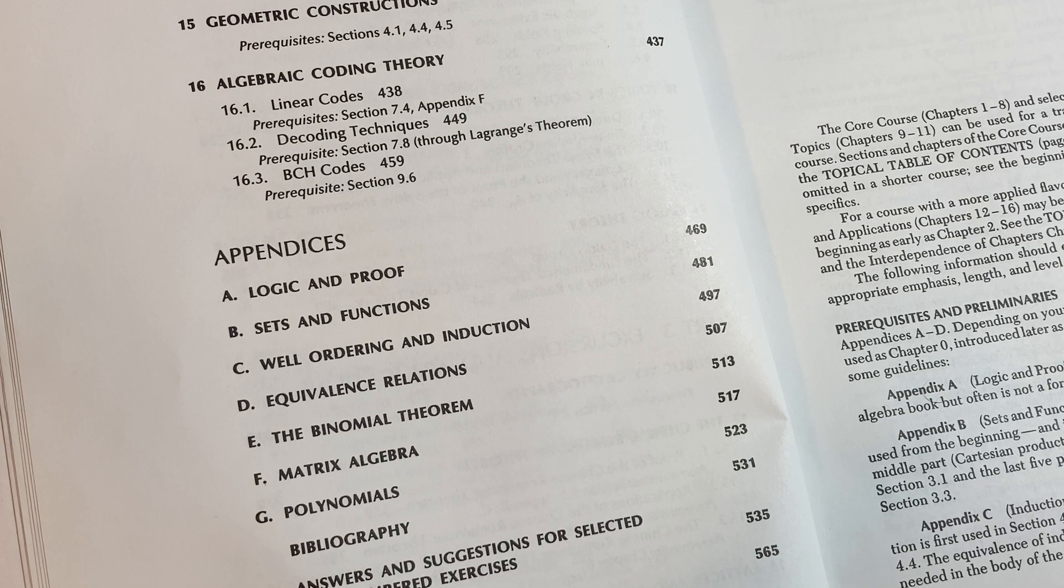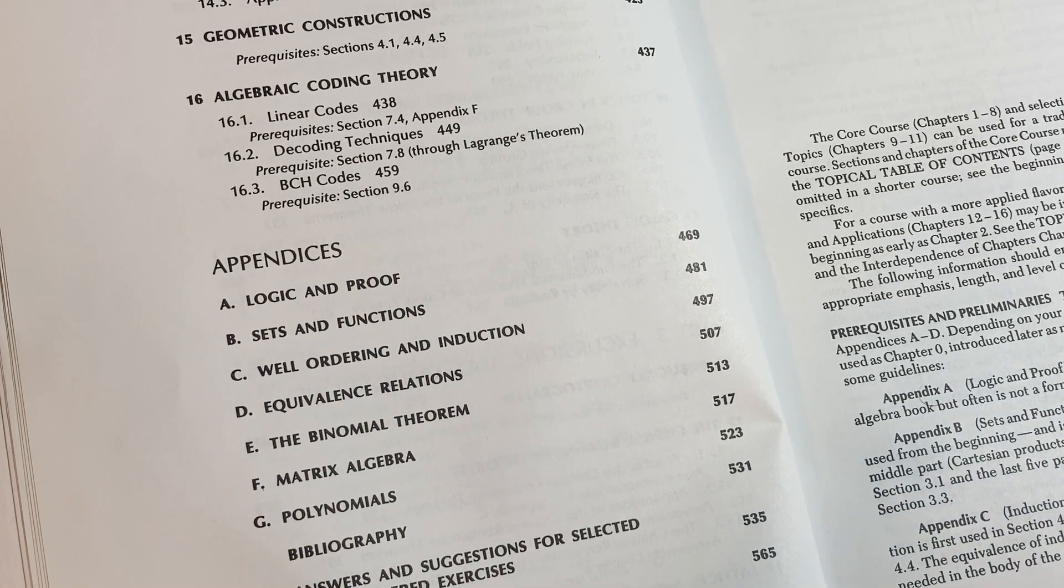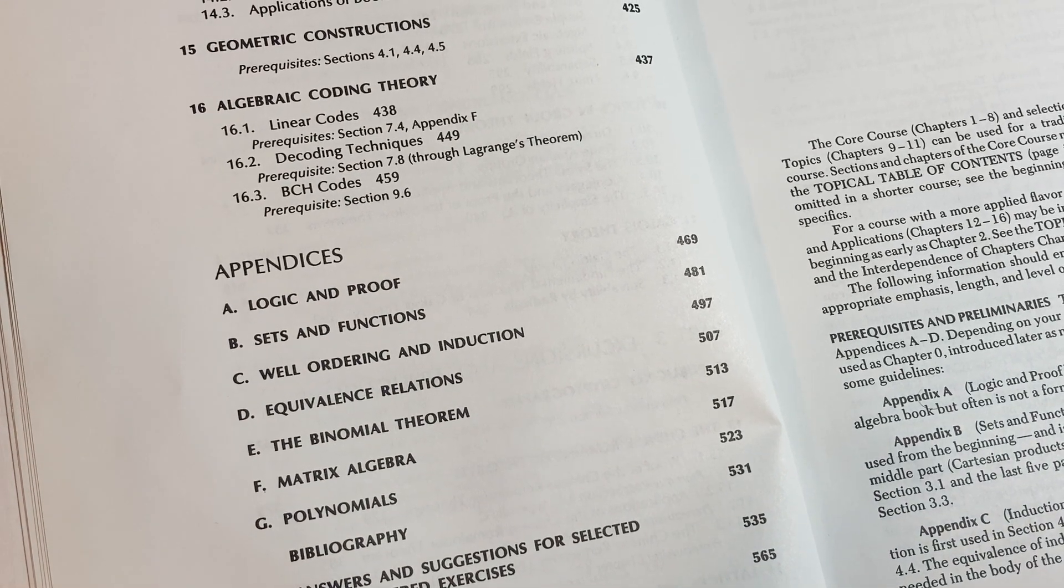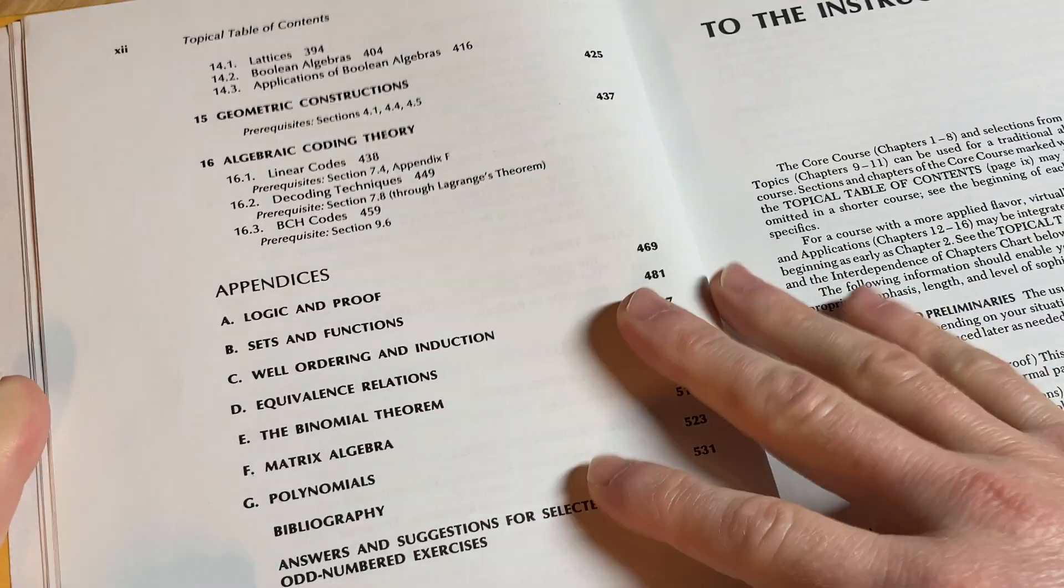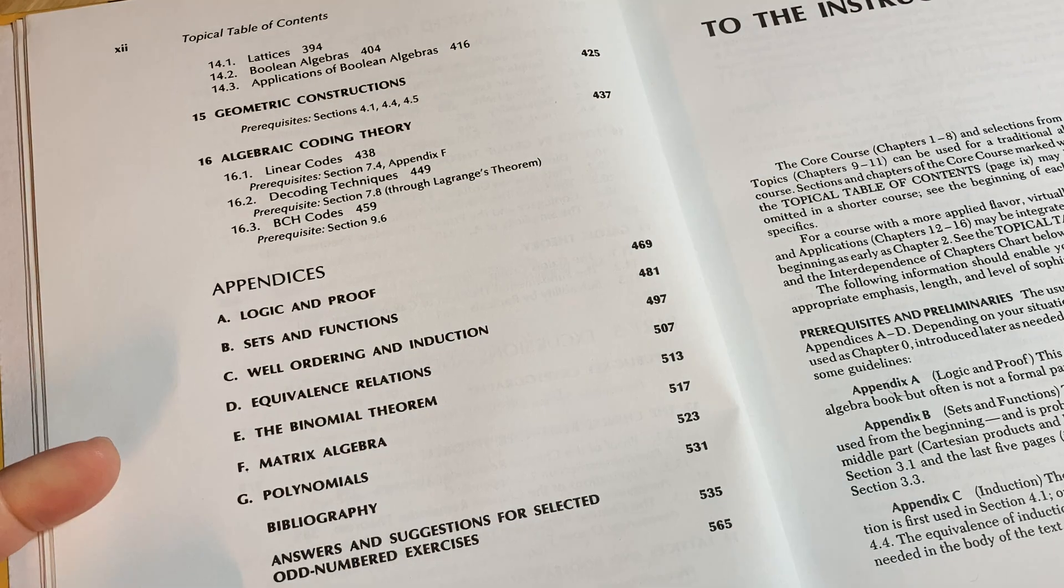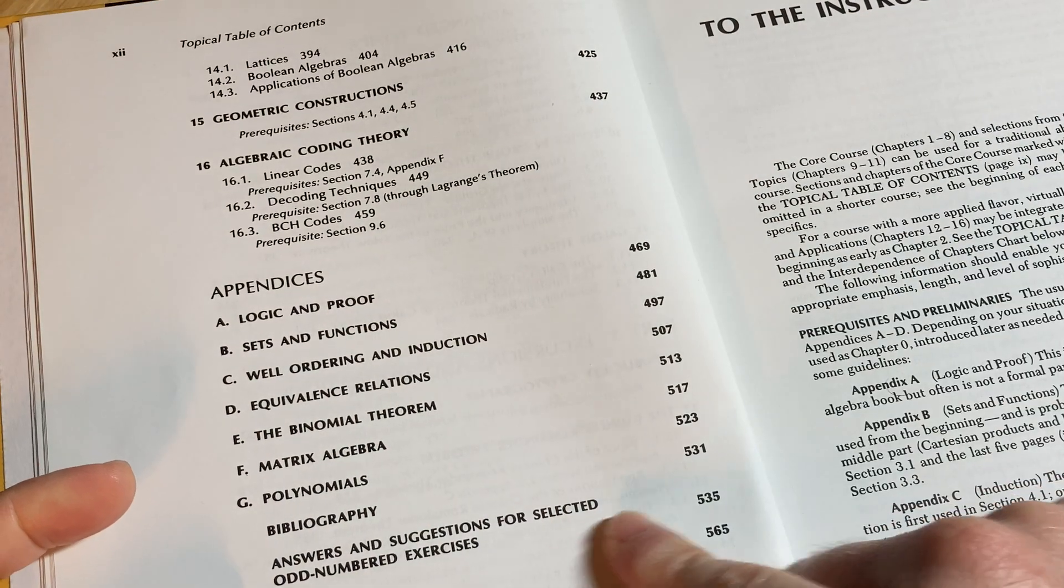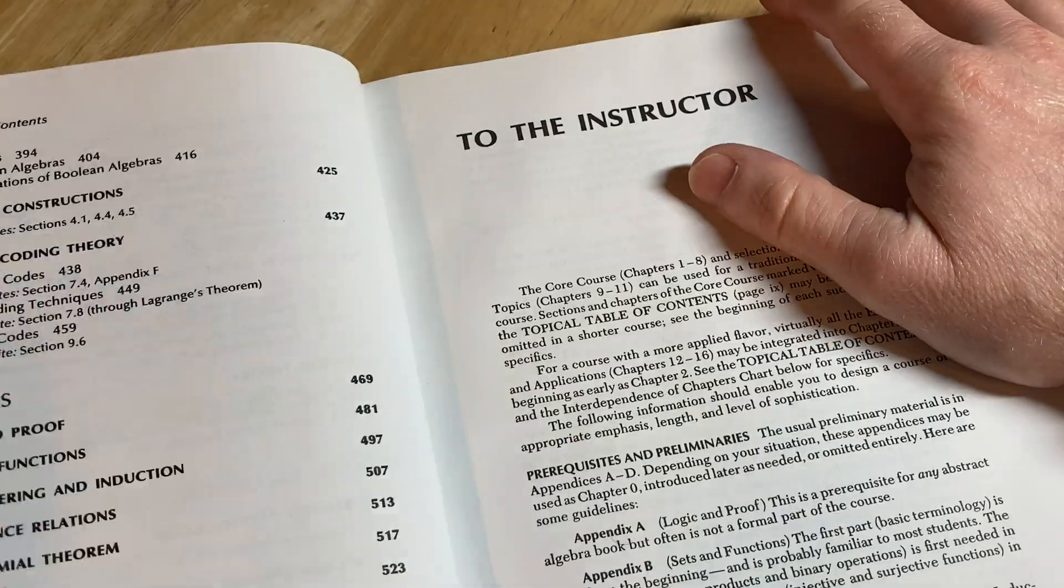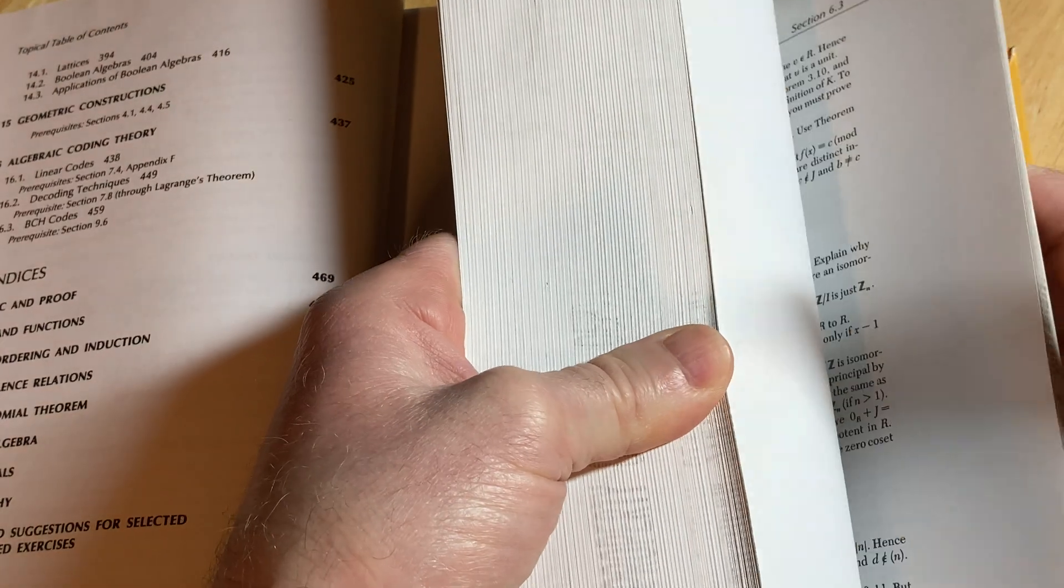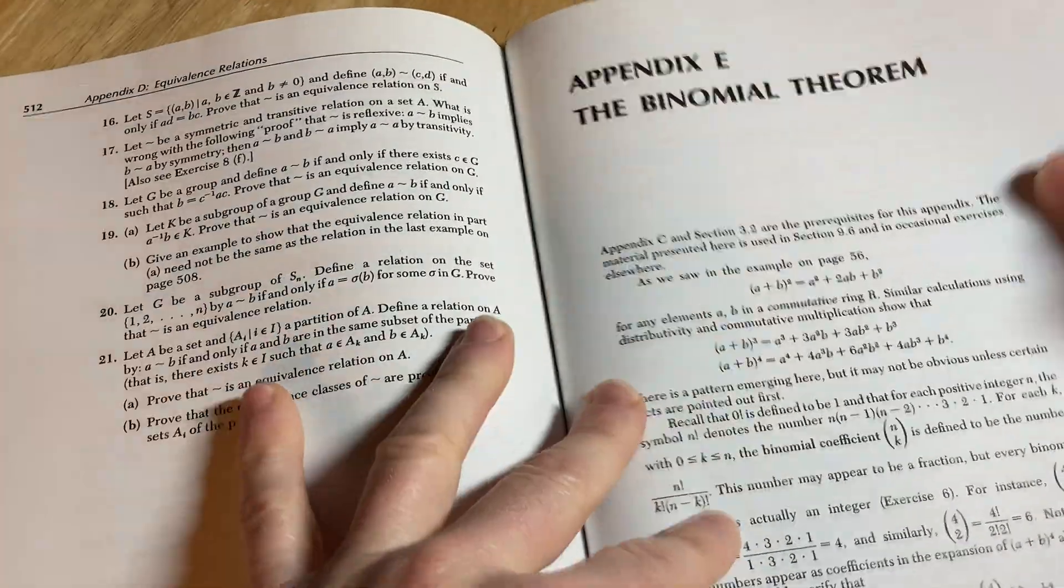And then you got some appendices: logic and proof, sets and functions, well-ordering and induction, equivalence relations, binomial theory, matrix algebra, polynomials. Kind of nice to have those little fun sections. You can actually just read these and learn some stuff. We'll look at those maybe later. And then answers and suggestions for selected odd-numbered exercises. Let's look now before I forget. So let's just look at the appendices. I'm just kind of interested in seeing, because these can be really fun to read, like these appendices.